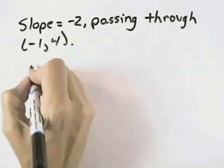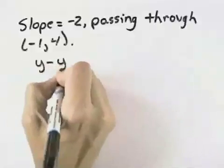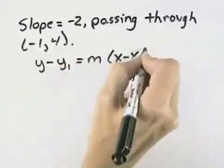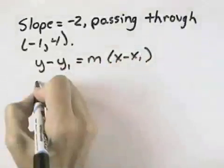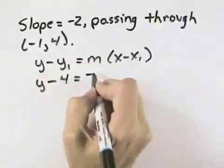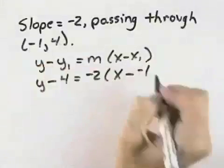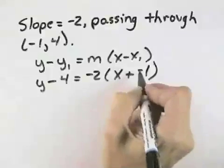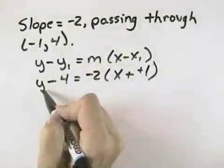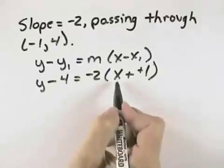But what we need to do is first write our equation in point-slope form, which is y minus the y value of your point equals m times x minus the x value of your point. So we have y minus the y value of our point is 4 equals negative 2 times x minus the x value of our point, which is negative 1, and minus the negative becomes plus a positive. So that point-slope form of our line is y minus 4 equals negative 2 times the quantity x plus 1.